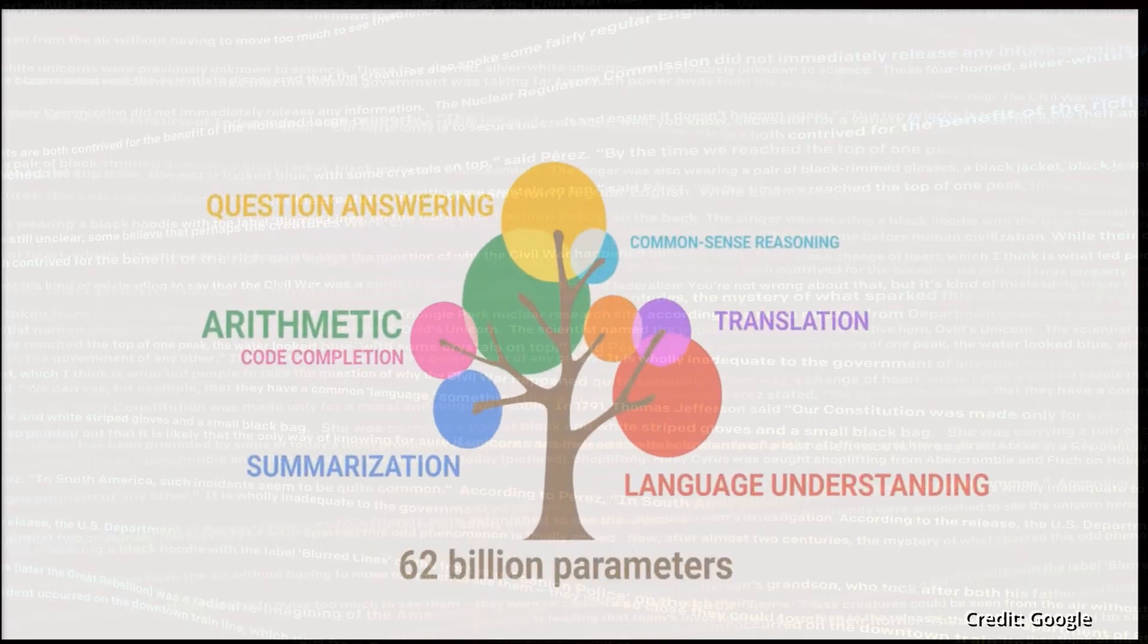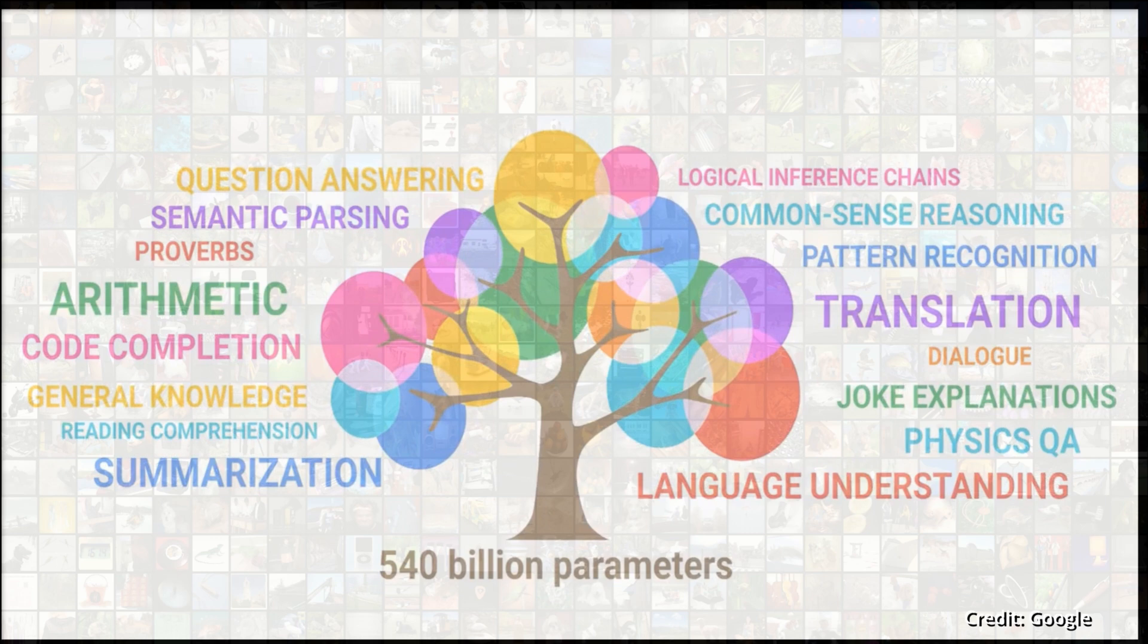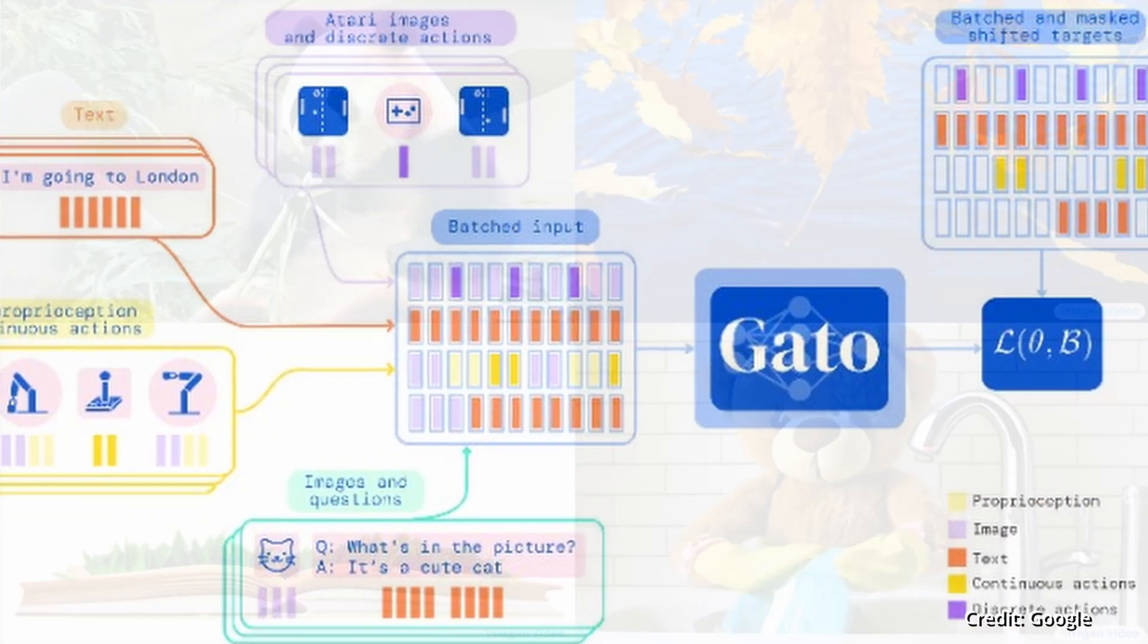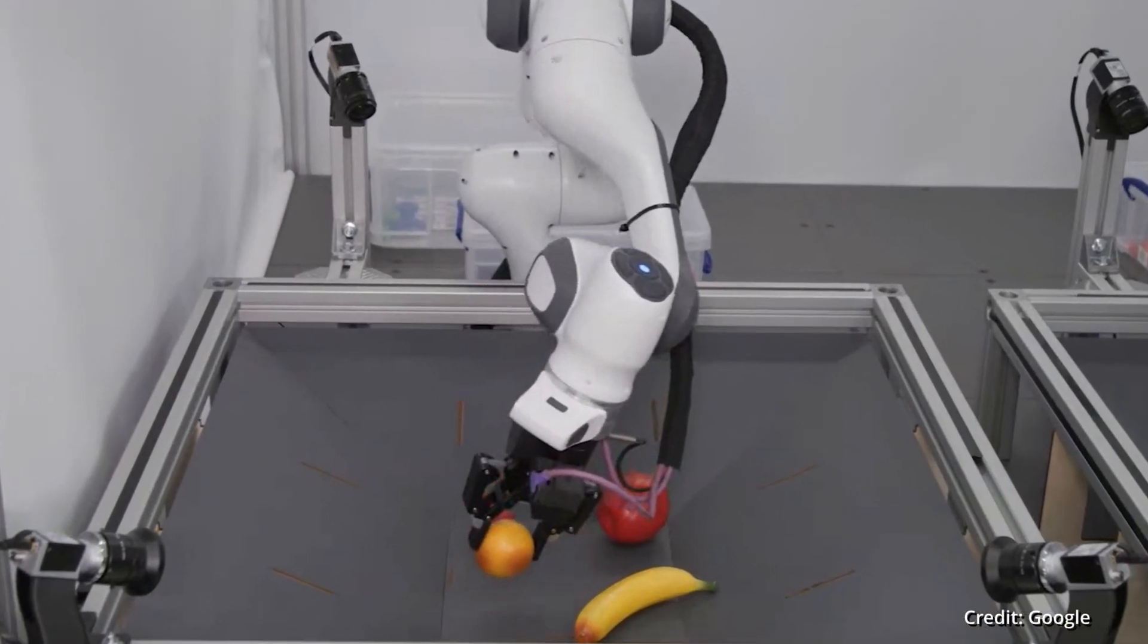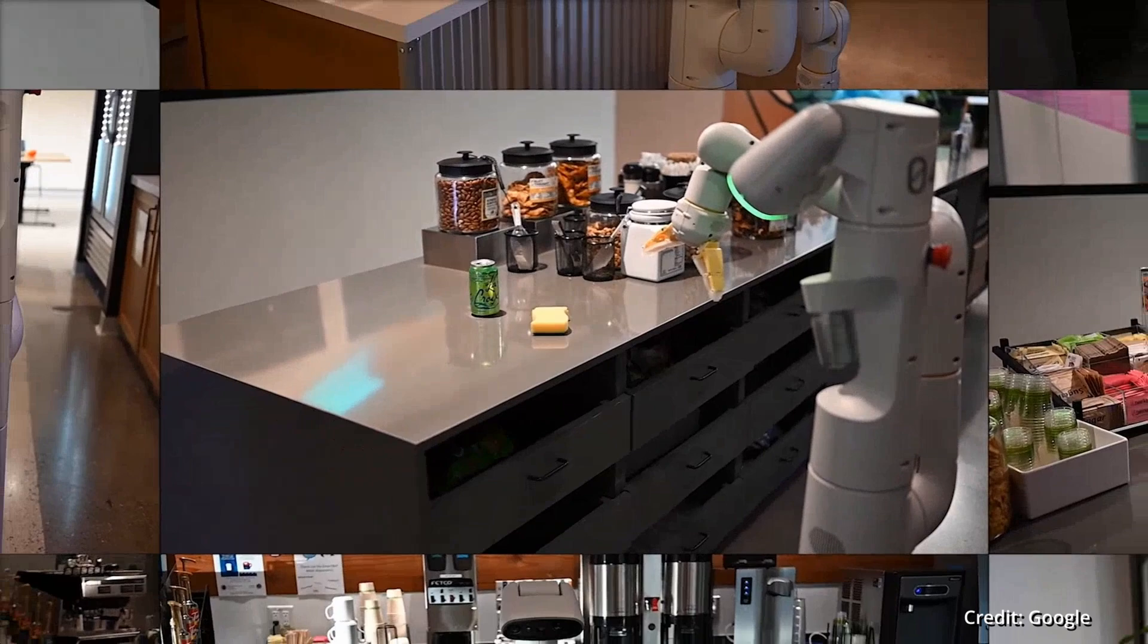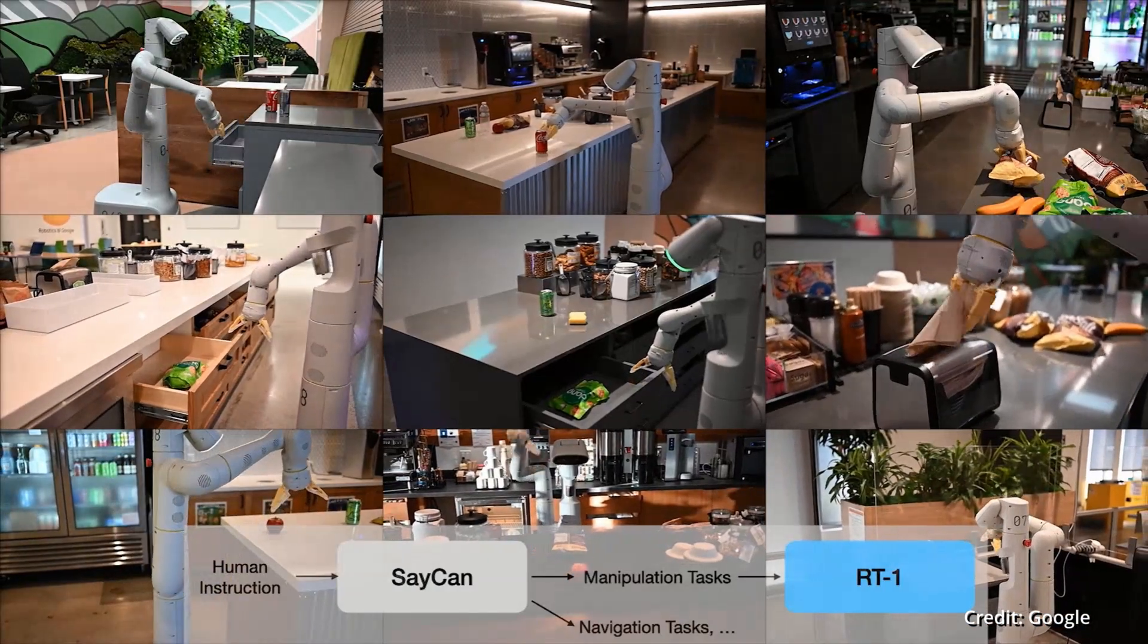Known for its ability to process language, images, and actions across both simulated and physical environments. What makes RoboCat truly extraordinary is its ability to expand on these foundational elements through self-improvement and adaptation across multiple real-world tasks and robotic arms.